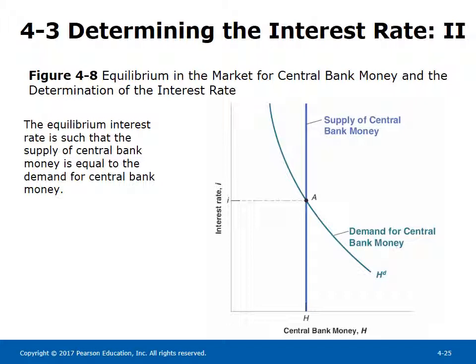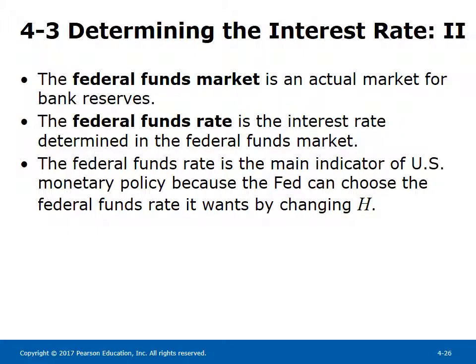Figure 4-8 illustrates equilibrium in the market for central bank money. The supply curve is vertical; the demand curve is downward sloping; their intersection gives the equilibrium interest rate. The interest rate the central bank influences directly is the federal funds rate, and all short-term interest rates in the economy depend on it. The federal funds market is an actual market for bank reserves. The federal funds rate is the main indicator of U.S. monetary policy because the Fed can choose it by changing h.